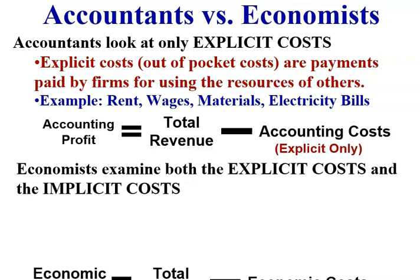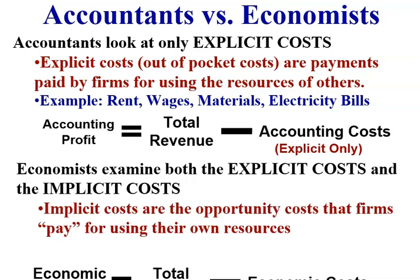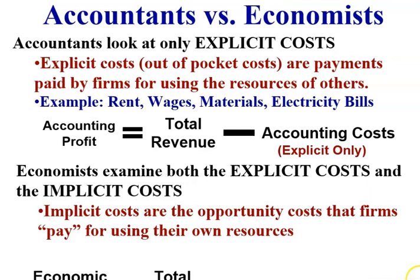As economists, we consider both explicit and implicit costs. By implicit, we refer to opportunity costs that firms pay for using their own resources. So economic profit is total revenue minus economic costs — explicit plus implicit costs.